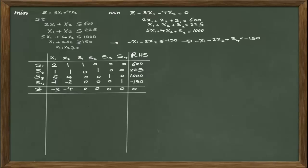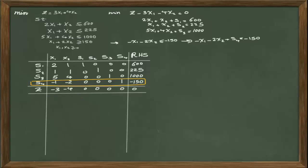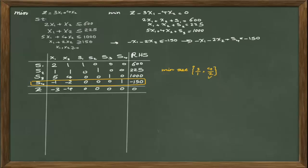The dual simplex method works by looking for the most negative value in the right hand side of the problem, which in this case is negative 150. This defines the pivot row. After defining the pivot row, we implement the minimum ratio test. This time, the minimum test is implemented by dividing the non-zero values in the row of z by the negative values in the pivot row. The non-zero values in the row of z are negative 3 and negative 4, and the corresponding pivot row values are negative 1 and negative 2. We do not consider signs when performing the minimum test. The minimum value corresponds to the second column, which is x2.